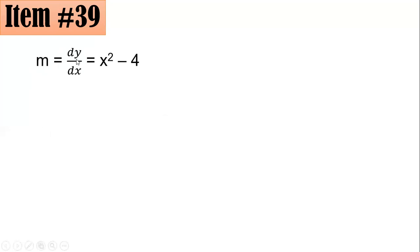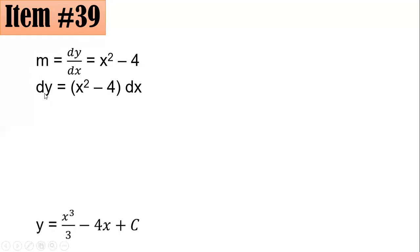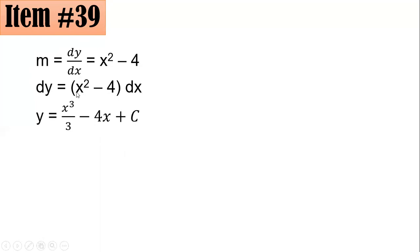Remember that slope is the first derivative of your function, so dy/dx equals x squared minus 4. Multiplying both sides by dx and integrating both sides: integrating dy gives y. Using the power rule for integration — add 1 to the exponent, and that becomes the denominator — so x squared integrates to x cubed over 3.